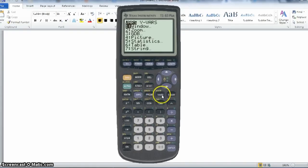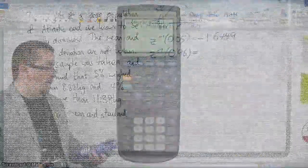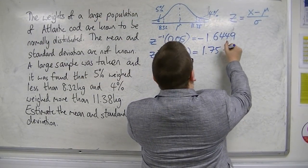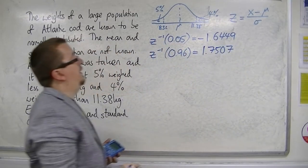Oh, I'm in the wrong bit, one moment, quit that. Let's try that again. So, second, and then VARS into the distributions, go down to inverse norm, 0.96, and this is the z value that we want, 1.75068607. We've got 1.7507 to 4 decimal places there.